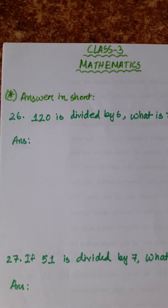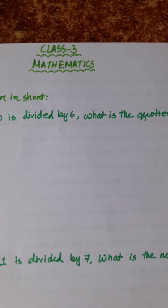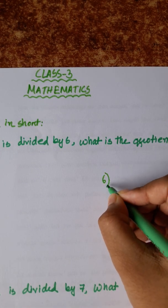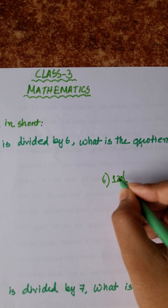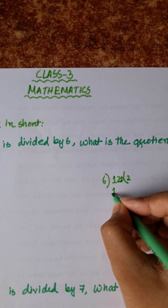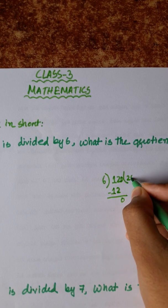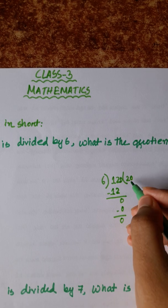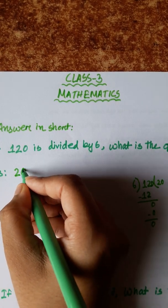Number 26: 120 is divided by 6, then what is the quotient? We have to first divide 120 by 6. 6 into 120 — 6 twos are 12, remainder 0. So the quotient is 20.